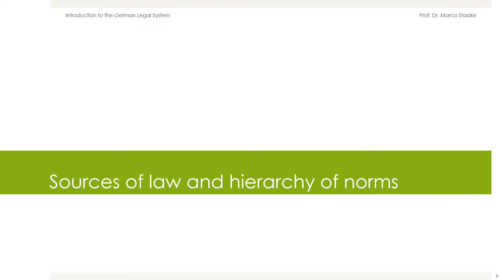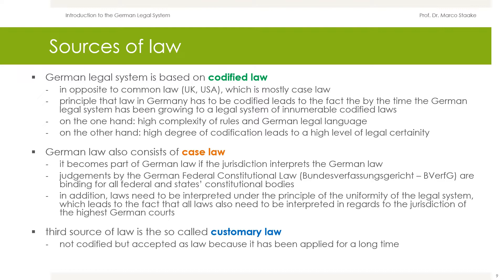Let's take a look at the sources of law and the hierarchy of norms. In opposition to case law, mainly known in relation to US and UK law, the German legal system is based on codified law. The principle that law in Germany has to be codified leads to the fact that over time the German legal system has grown into a legal system of innumerable codified laws.